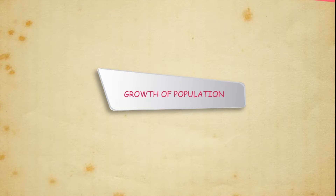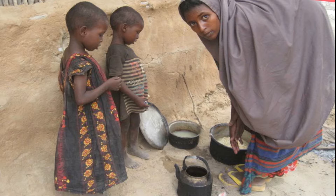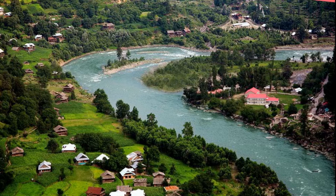Growth of population: Population growth has been very dramatic — in the late 19th century there were about one billion people on Earth, but by the end of the 20th century it had reached six billion. Natural resources have had to be stretched far beyond their capacity. During early human history, growth was very slow as people led a nomadic life; scarcity of food and spread of diseases were the main causes. Growth accelerated when people settled in river valleys and agriculture developed.